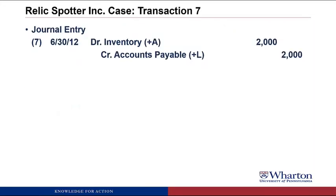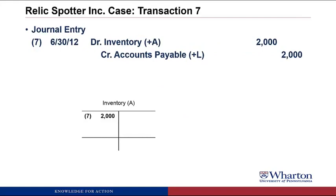We post this one to T-accounts. There's no cash T-account this time. Instead, we create an inventory T-account with a debit balance and create an accounts payable T-account with a credit balance.